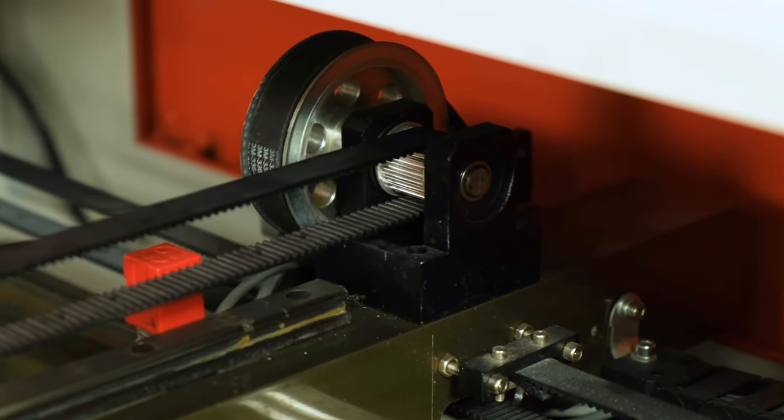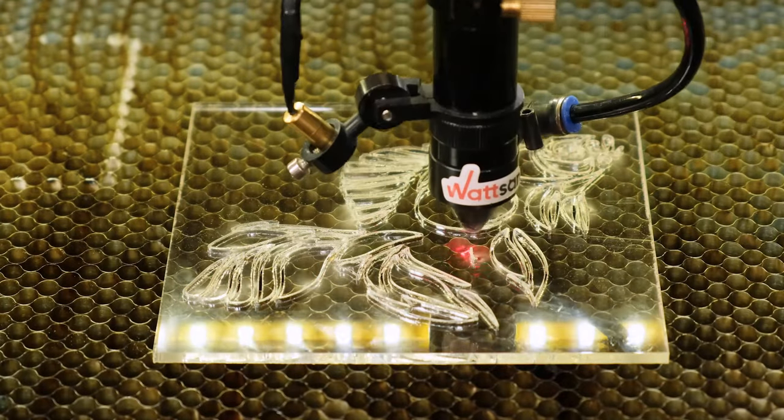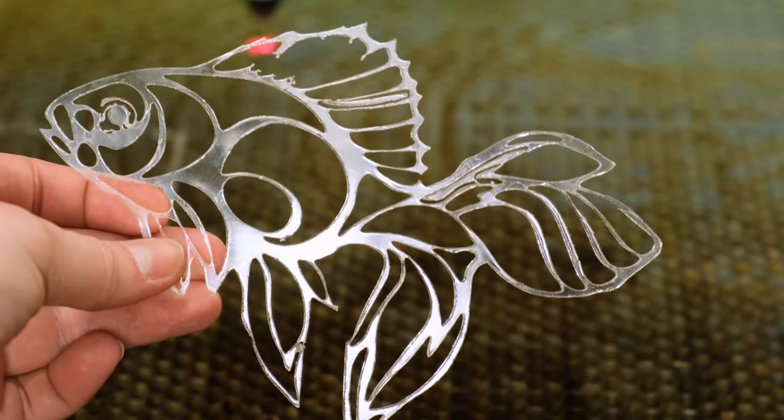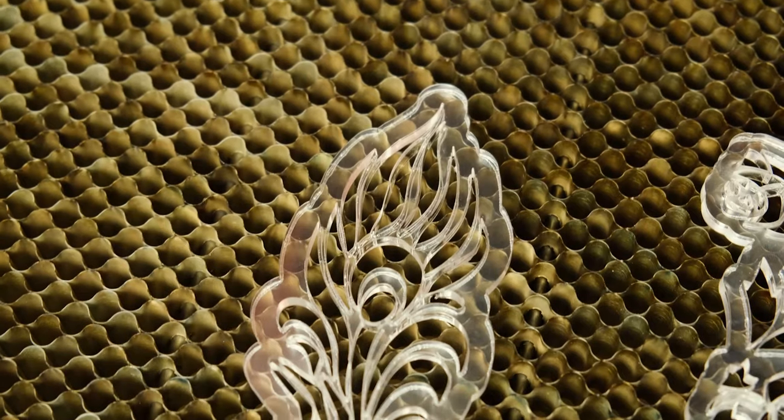According to the production method, acrylic glasses are of two types: moulded and extruded. Extruded acrylic after processing on a CO2 laser machine can crack due to residual stress, so moulded acrylic is better suited for cutting on a laser machine.